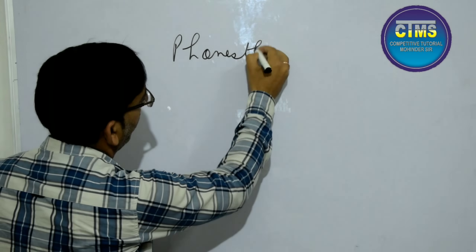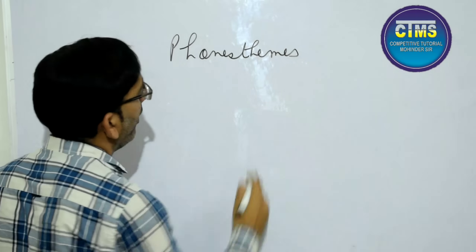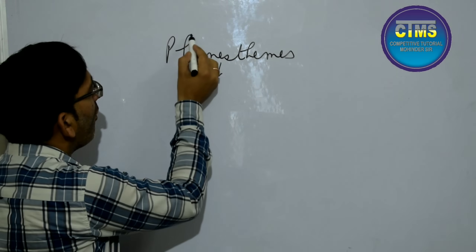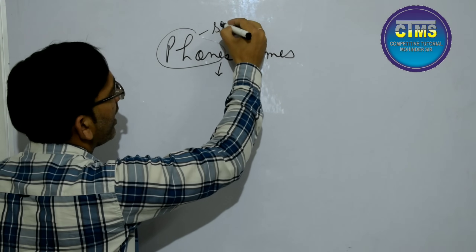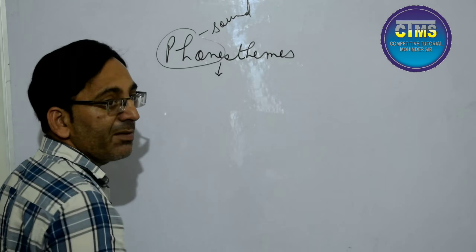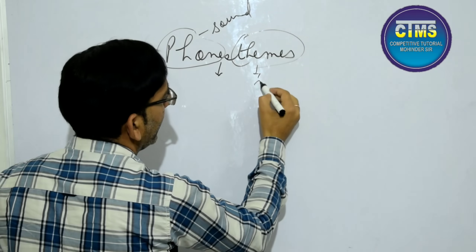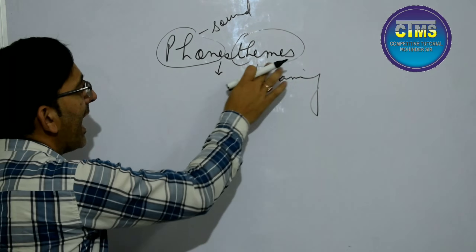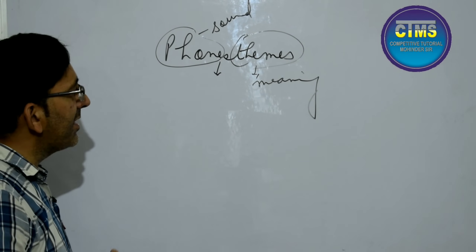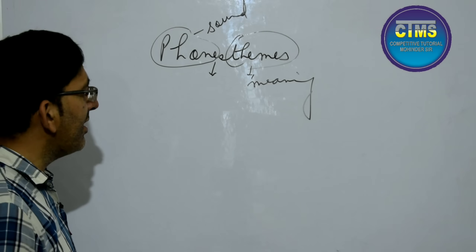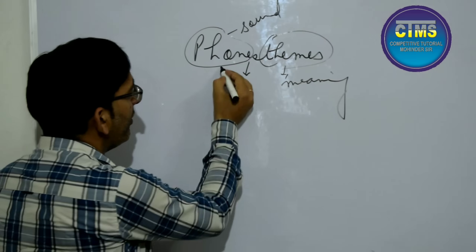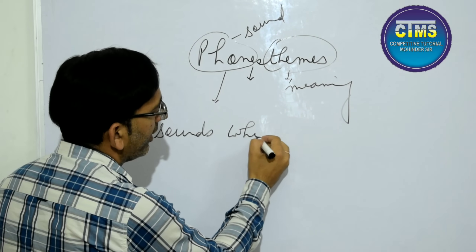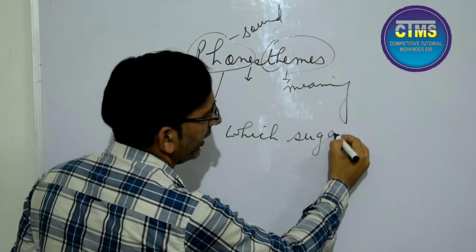Found Themes is a very important topic from a linguistic point of view. Now, what are Found Themes? Found Themes consists of two words: 'found' and 'themes.' 'Found' means sound, and 'themes' means meaning. So what is the meaning of Found Themes? Found Themes means sounds which suggest meaning or which give meaning.